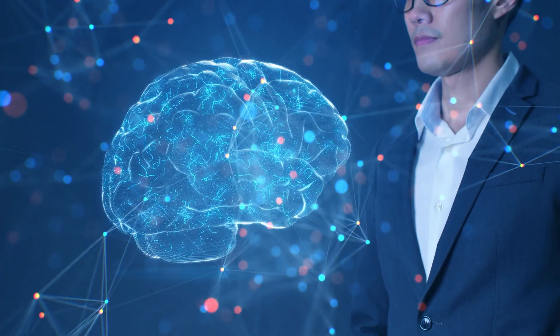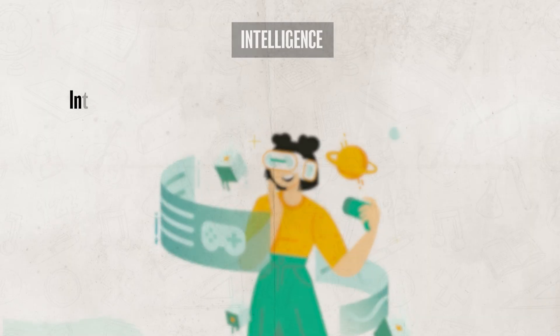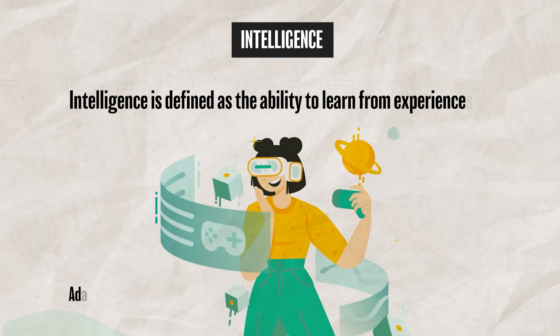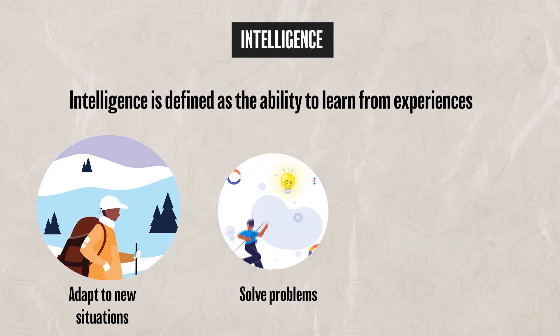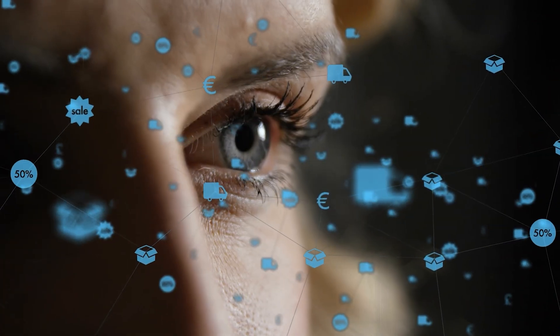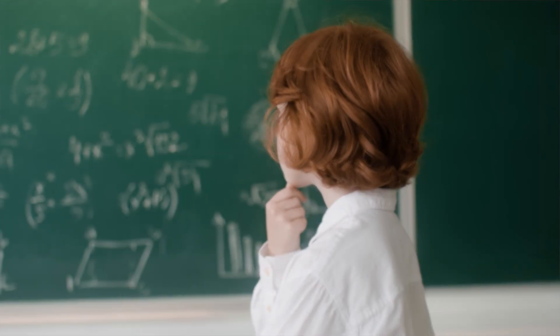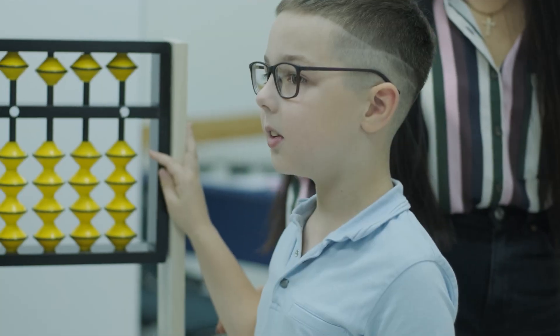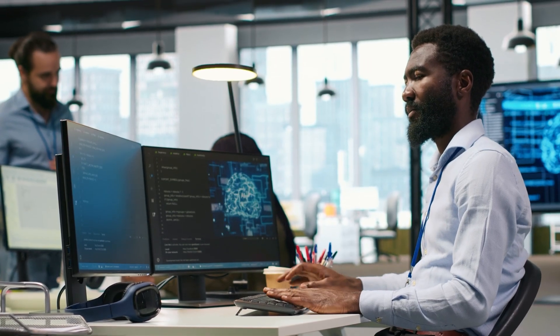When talking about intelligence, we have to start by highlighting that psychologists and people have been debating for years what intelligence really is. Generally, intelligence is defined as the ability to learn from experiences, adapt to new situations, solve problems, and apply knowledge in a variety of different contexts. But the details of what counts as intelligent behavior and how to measure it are definitely up for debate. Different definitions influence how intelligence tests are designed, how results are interpreted, and how people are ultimately labeled in our schools, workplaces, and society in general.